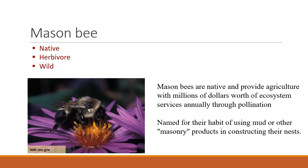There are a lot of kinds of bees that are important on rangelands. The mason bee is perhaps the most widespread, occurring in nearly every state. They're native, herbivores, and wild, and they're really important as pollinators both on rangelands and in agricultural systems. They're called mason bees because they use mud and other masonry products to construct their nests — they're kind of little masons that create their nests out of mud and rocks.